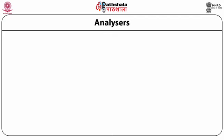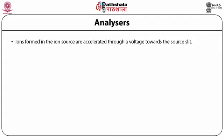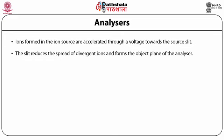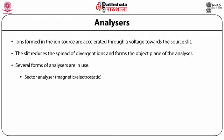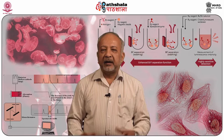Mass spectrometry also comprises analyzers. In the analyzer, ions formed in the ion source are accelerated through a voltage towards the source slit. The slit reduces the spread of divergent ions and forms the object plane of the analyzer. Several forms of analyzers are in use, such as sector analyzers (magnetic or electrostatic), quadrupole analyzers, ion trap analyzers, time-of-flight analyzers, and ion cyclotron resonance analyzers.